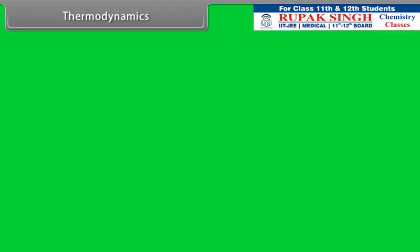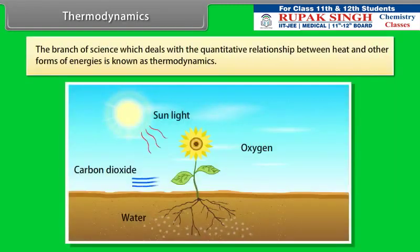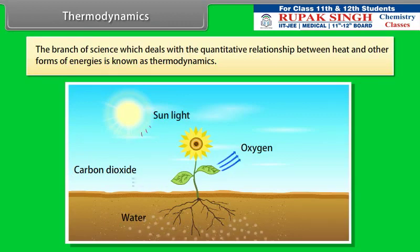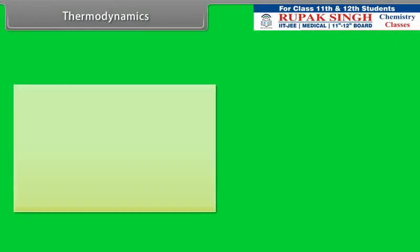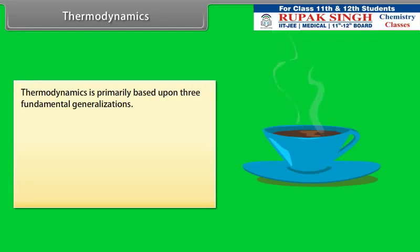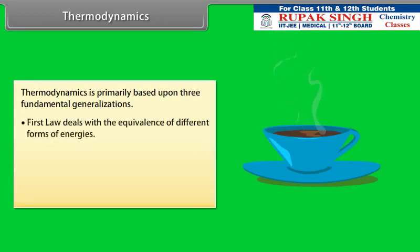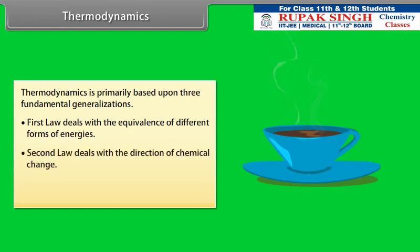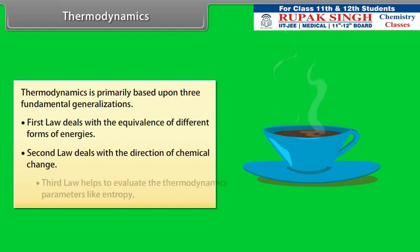Thermodynamics: the branch of science which deals with the quantitative relationship between heat and other forms of energies is known as thermodynamics. Thermodynamics is primarily based upon three fundamental generalizations: the first law deals with the equivalence of different forms of energies, the second law deals with the direction of chemical change, and the third law helps to evaluate thermodynamic parameters like entropy.